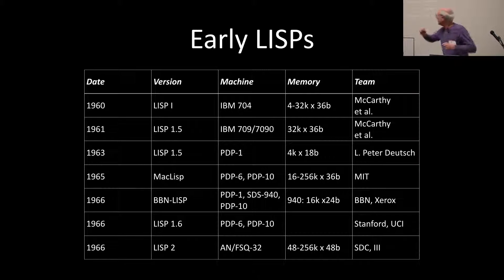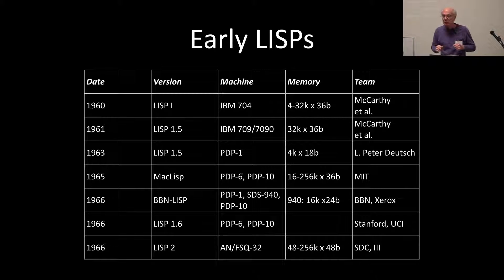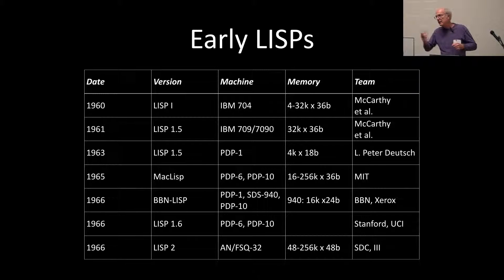What happened instead was BBN LISP, MACLISP, and Stanford LISP 1.6 all came along at about that same time. They ran on PDP-10s, which had roughly the same address space. They didn't have infix syntax and type declarations, but they gradually got good numeric support. And that was the wave of the 70s until Common LISP.